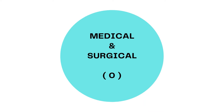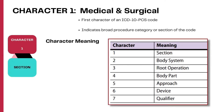The medical and surgical section contains the majority of procedures. The first character identifies which section the code belongs to, indicating a broader category. This table shows what each character exactly means in the medical and surgical section: character one is the section, character two is the body system, character three is the root operation, character four is the body part, character five is the approach, character six is the device if left in place, and character seven is the qualifier.